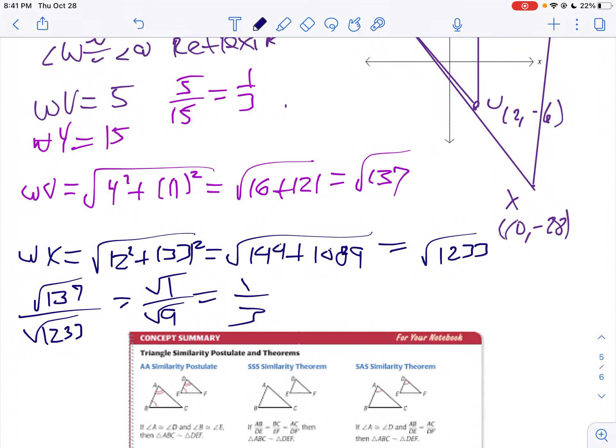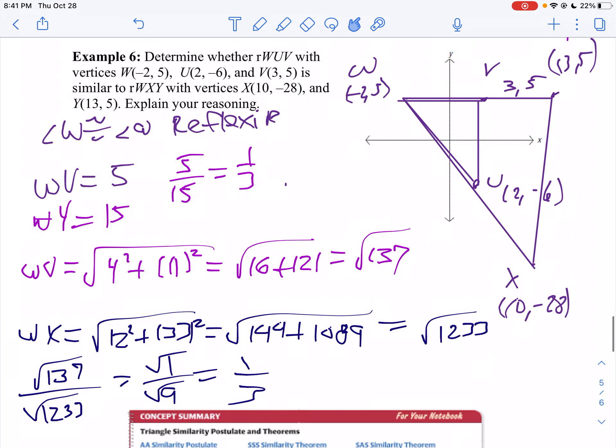Notice we have two triangles that have two sides in the same ratio with the angle between them. So these two triangles are indeed similar. The reason? Side angle side similarity.